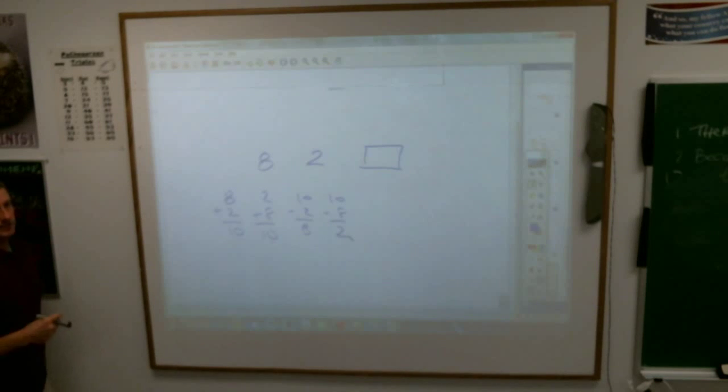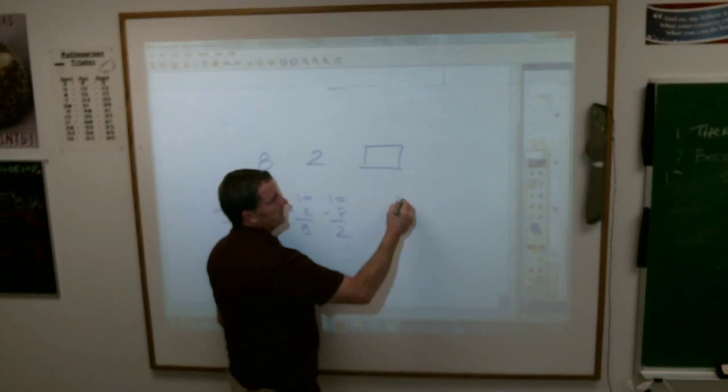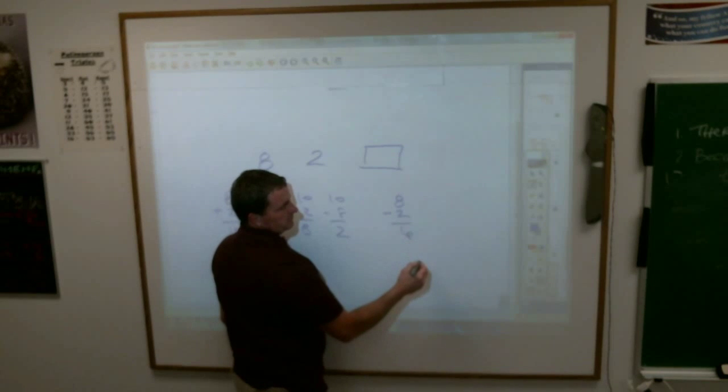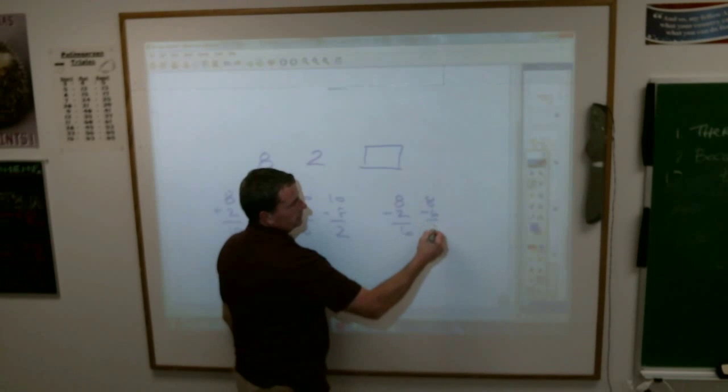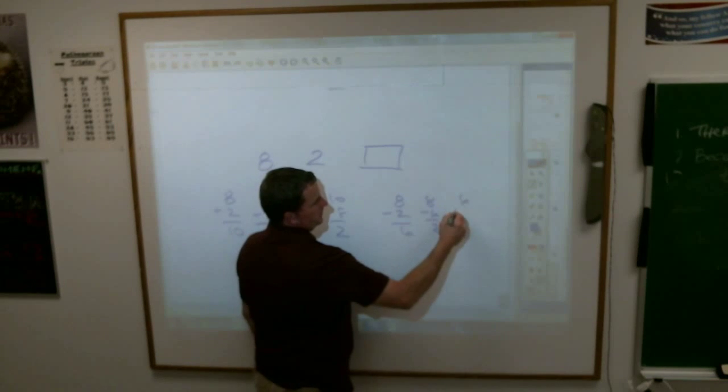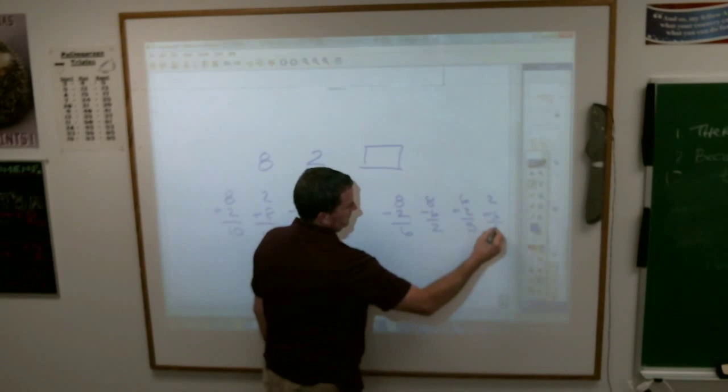But there's another one that's not quite as obvious. Yeah? Six. Why would that be? Because you could do 8 minus 2 is 6, right? 8 minus 6 is 2, 6 plus 2 is 8, and 2 plus 6 is 8.